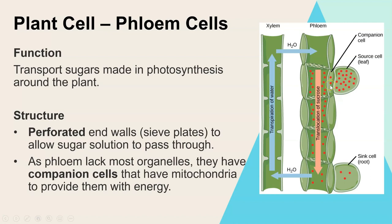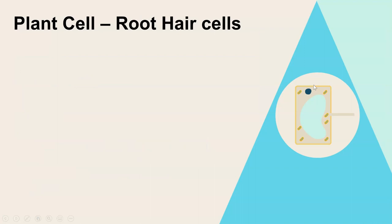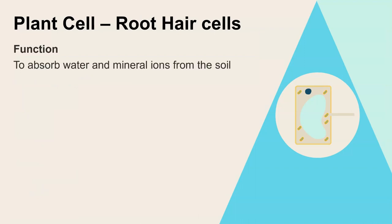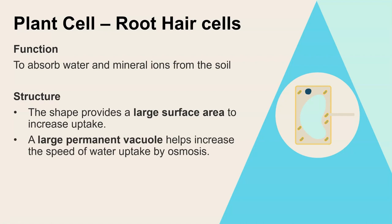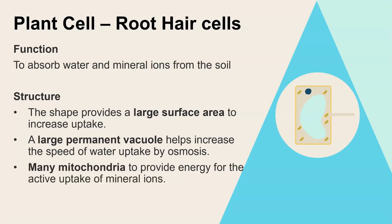Companion cells have mitochondria to provide the energy that the phloem cells need, because the phloem cell itself doesn't have mitochondria. The last specialized cell is the root hair cell. Root hair cells are responsible for absorbing water and mineral ions from the soil - water by osmosis, mineral ions by active transport. The adaptations include a hair-like protruding structure that provides a large surface area for active transport and osmosis, a large permanent vacuole that helps increase the speed of water uptake by osmosis, and lots of mitochondria to provide energy for active transport to uptake mineral ions.